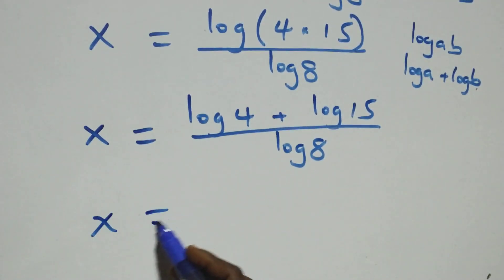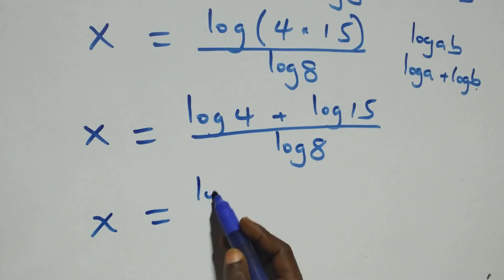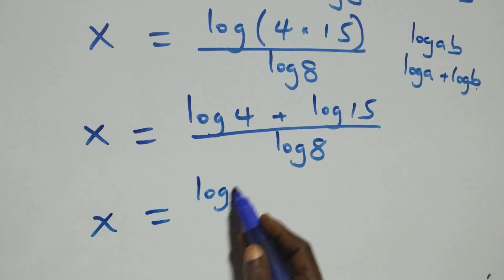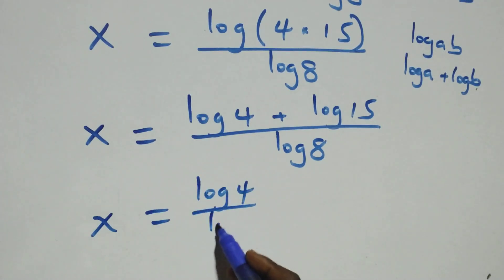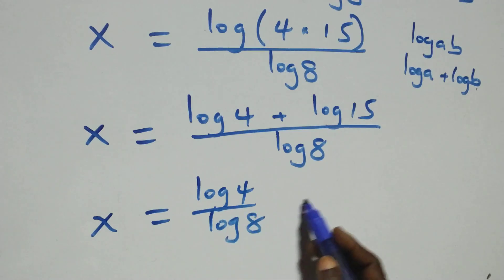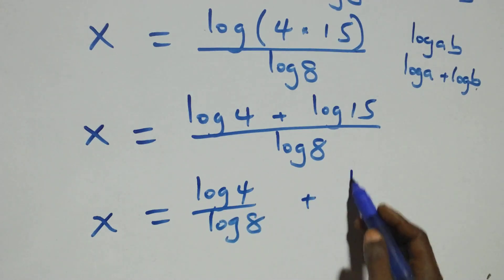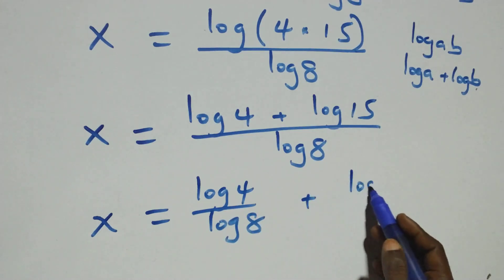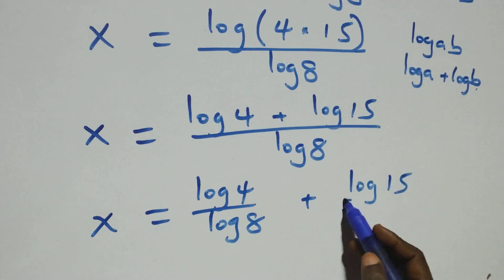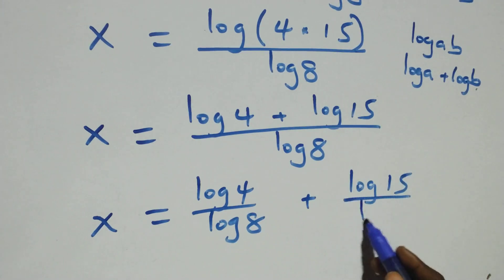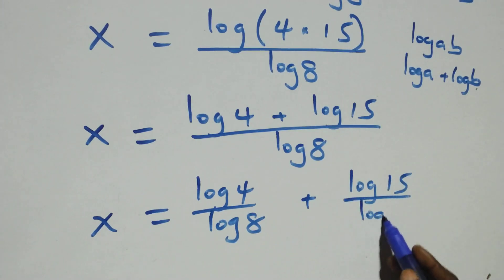Here we separate this into two fractions and we have x equals to log four over log eight, plus log fifteen over log eight.